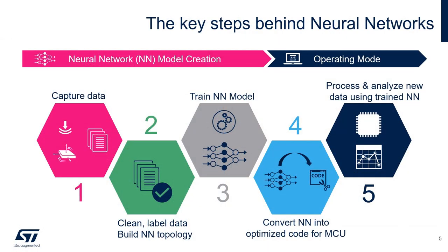There are five key steps behind running a neural network on MCUs. First, capture data. Then clean and label collected data and build the network topology. Train the neural network with the data and convert the trained model into optimized code that runs on STM32 microcontrollers. And finally, run the neural network on the device.